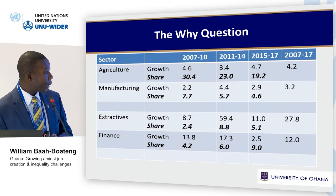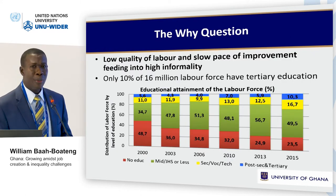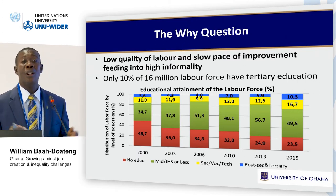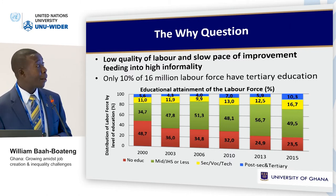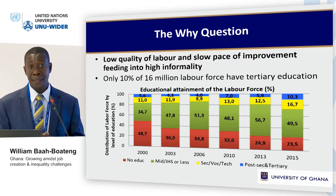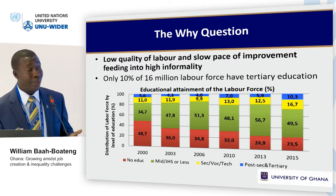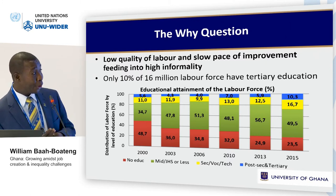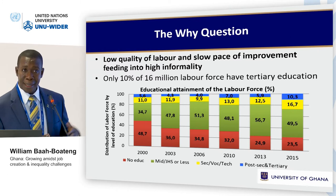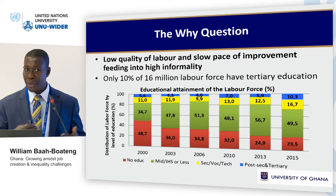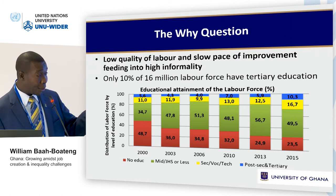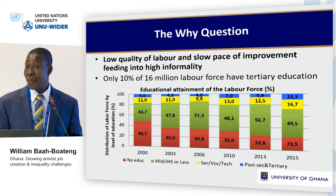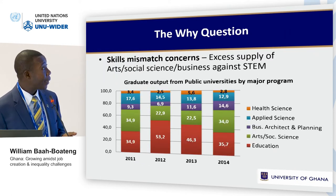On the supply side, we have low quality of labor and a slow pace of improvement. Looking at educational attainment of the labor force as of 2015, just about 10.3 percent of the 16 million labor force have tertiary education, while 23.5 percent have no education and 49.5 percent have only basic education — combining these two gives about 70 percent. This explains the high informality, because if the majority of the labor force has only basic education, the informal sector is their space. It also explains why finance may not generate much employment since it attracts highly skilled people.